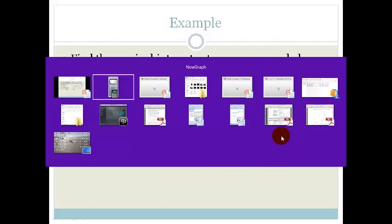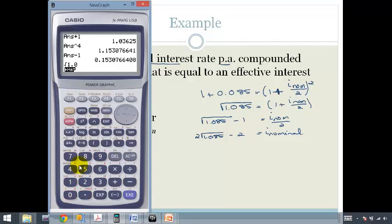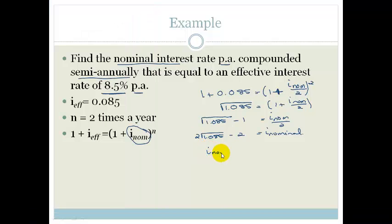So let's now work out what that is using our calculator. So we go shift square root of 1.085 equals times 2 minus 2, let's just leave that 2, and it becomes 0.083. So i nominal is equal to 0.083. Therefore the nominal interest rate equals 8.3% per annum compounded semi-annually.